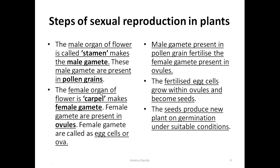The female organ contains the female gametes, also called egg cells or ova. The male gametes present in the pollen grain will fertilize the female gametes present in the ovules. The fertilized egg grows within the ovules and becomes the seed — so ovules become seeds. The seeds produce a new plant when they germinate under suitable conditions.